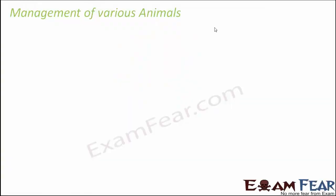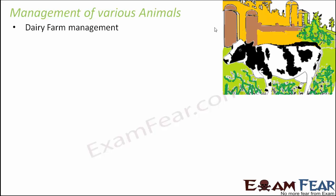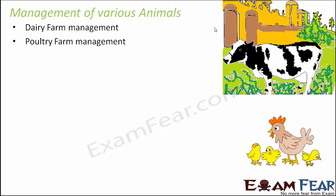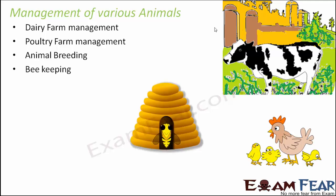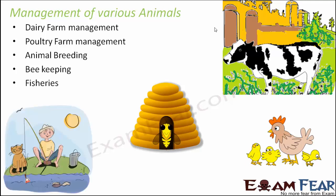Let us now quickly see how these various animals are managed. We often see dairy farm management, where animals capable of giving milk are taken care of, managed, and well fed 24/7 so that they can give us more and better quality milk. Poultry farm management involves birds taken care of because they give us eggs, and the birds themselves are also eaten — like chicken and turkey. We also have beekeeping because honeybees provide us honey, which is very nutritious.